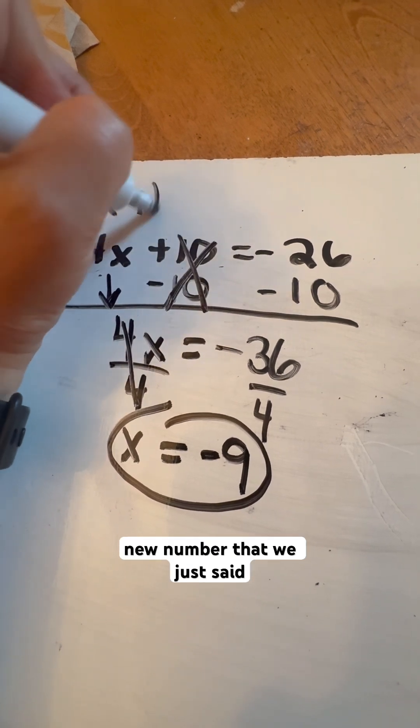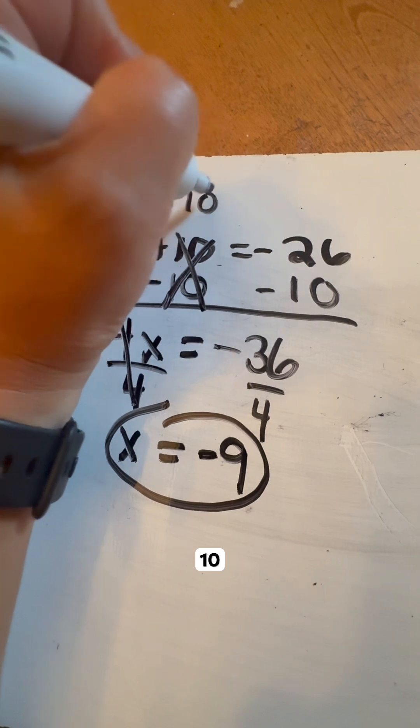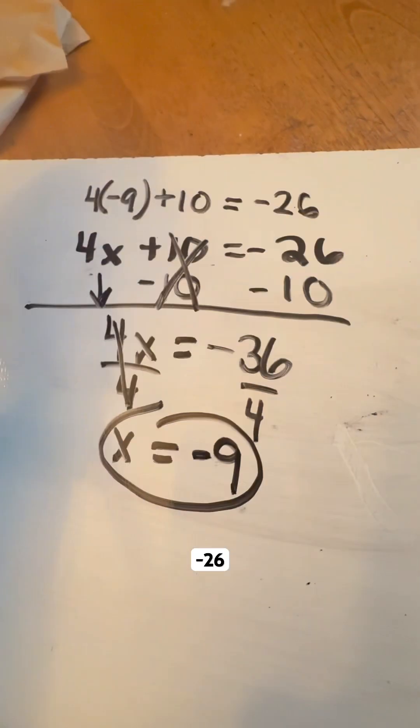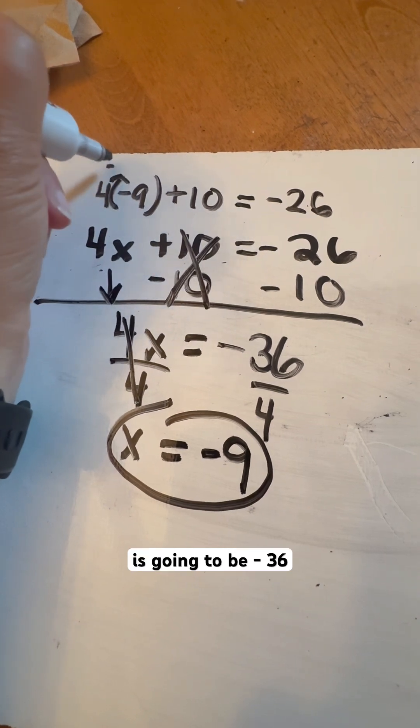4 times our new number that we just said, which was negative 9, we're going to add 10 to it. And we should get negative 26 on the left hand side when we do this. So 4 times negative 9 is going to be negative 36.